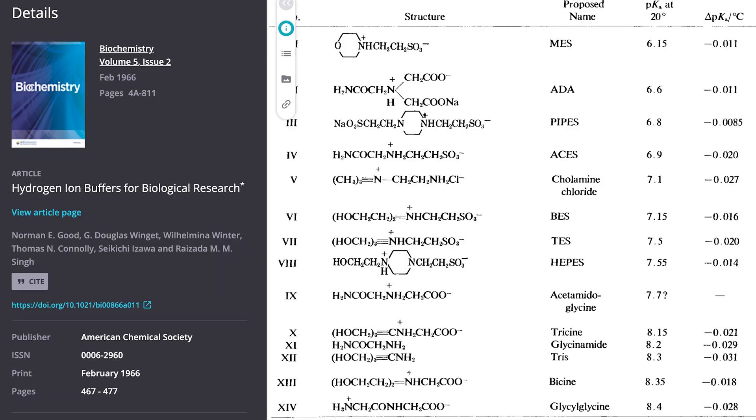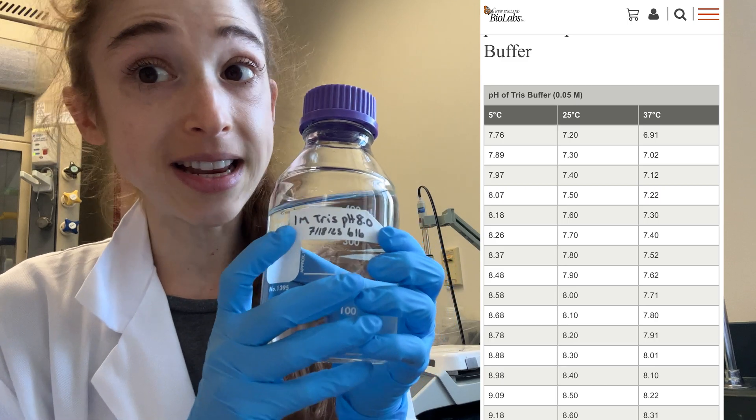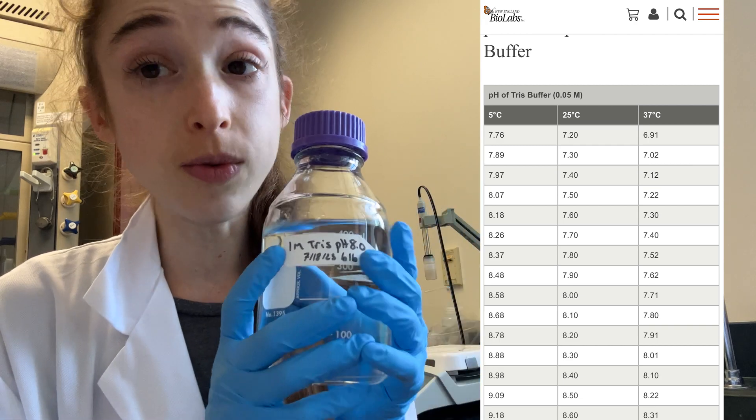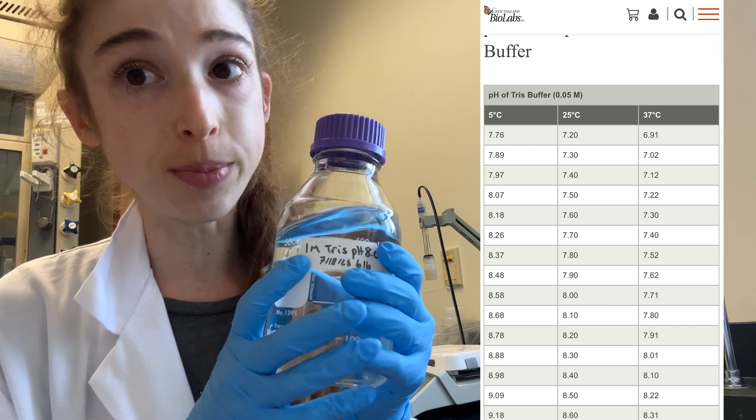Some buffers are more notorious for this. The most notorious is Tris. Basically, for every decrease in a degree Celsius that you go with your Tris buffer, you're going to get an increase of about 0.03 in your pH.